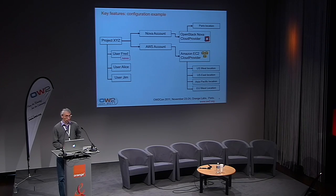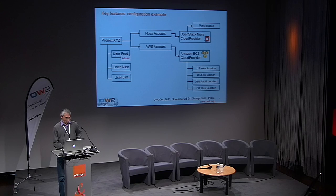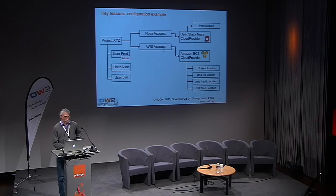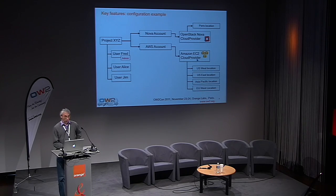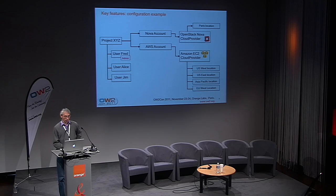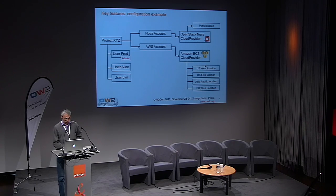As a concrete example, consider a project called XYZ with three members — myself as administrator, Alice, and Bob. This project is tied to two cloud provider accounts: an OpenStack Nova account and an Amazon EC2 account. These providers are managed by the platform with the ability to direct resource provisioning requests to a specific location. The private Nova installation is deployed in Paris, and for EC2 we have standard locations available in US, Asia, and Europe.